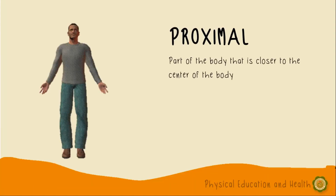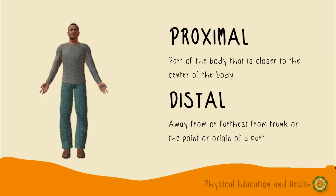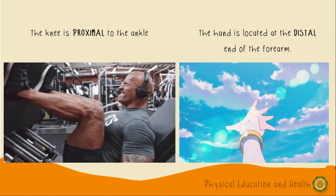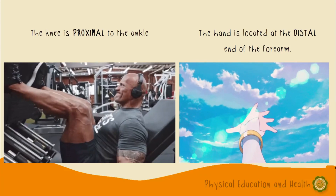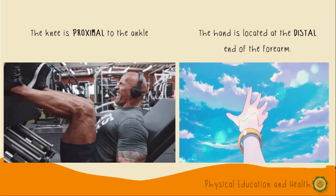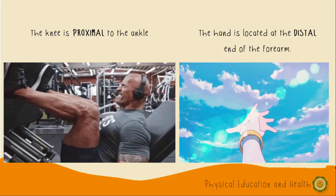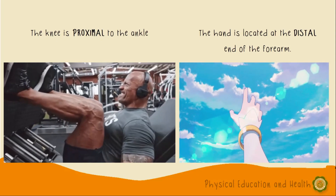Proximal refers to the part of the body that is closer to the center of the body, while distal is away from or farthest from the trunk or the point of origin of a part. All red arrows indicate proximal, and all yellow arrows indicate distal. Tandaan, ginagamit lang natin ang mga directional terms na ito if we are going to describe two joints in one limb — either the arm or the leg. For example, the knee is proximal to the ankle because the knee is closer to where the leg inserts to the body. Next, the hand is located at the distal end of the forearm because the hand is further away.